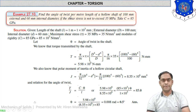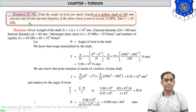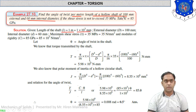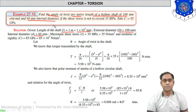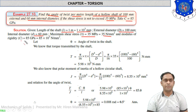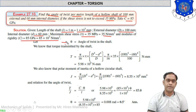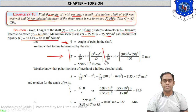Numerical 7: Find the angle of twist per meter length of a hollow shaft with external diameter D = 100 mm and internal diameter d = 60 mm. Since it is per meter length, take L = 1 m = 1000 mm. Shear stress τ = 35 MPa = 35 N/mm². Modulus of rigidity G = 85 GPa = 85 × 10³ N/mm². We need to find angle of twist θ.